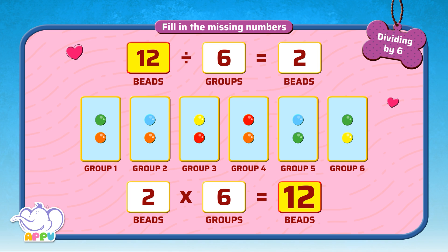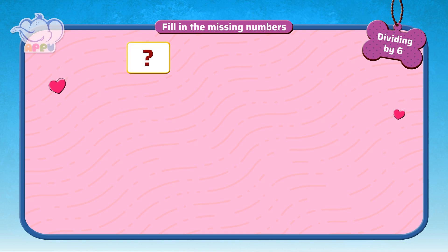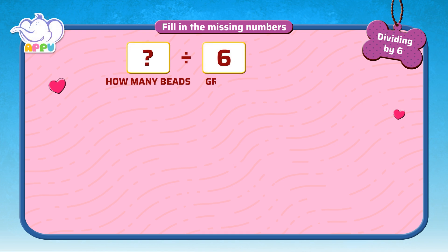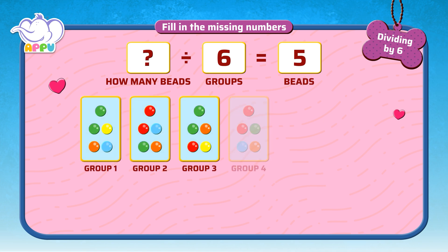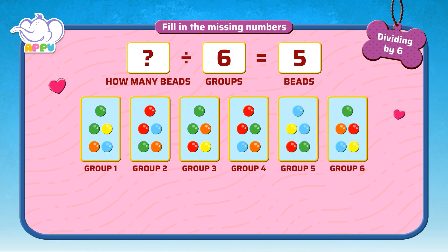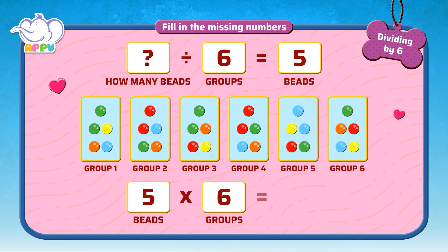That's right! We have to find out how many beads, when divided into 6 groups, gives us 5 beads. We know that 5 beads in 6 groups equals 30. 5 times 6 equals...